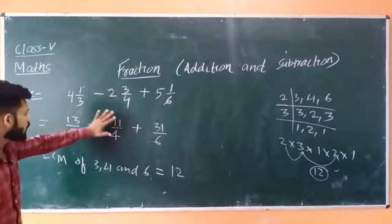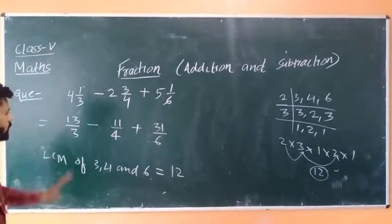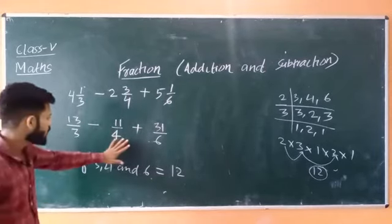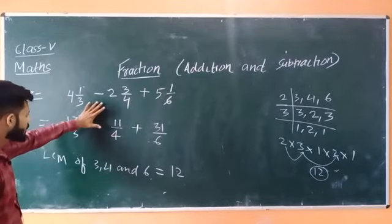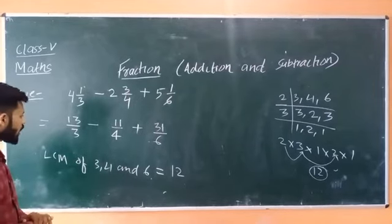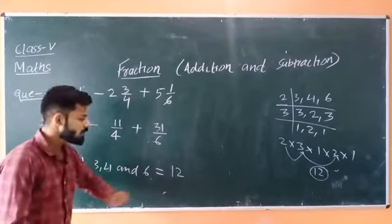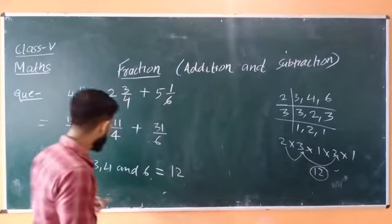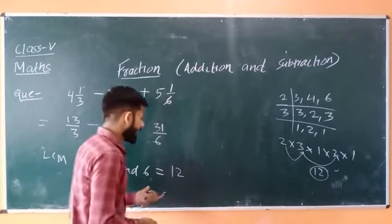The question has both addition and subtraction together. So the first step is to convert all the mixed fractions into improper fractions. The second step is to find the LCM of all the denominators.